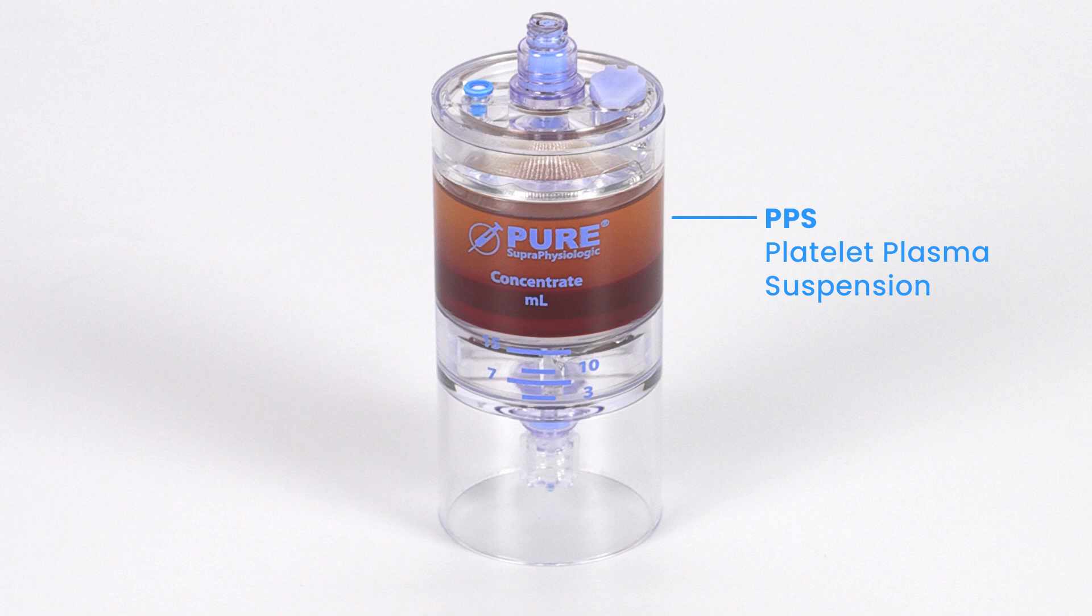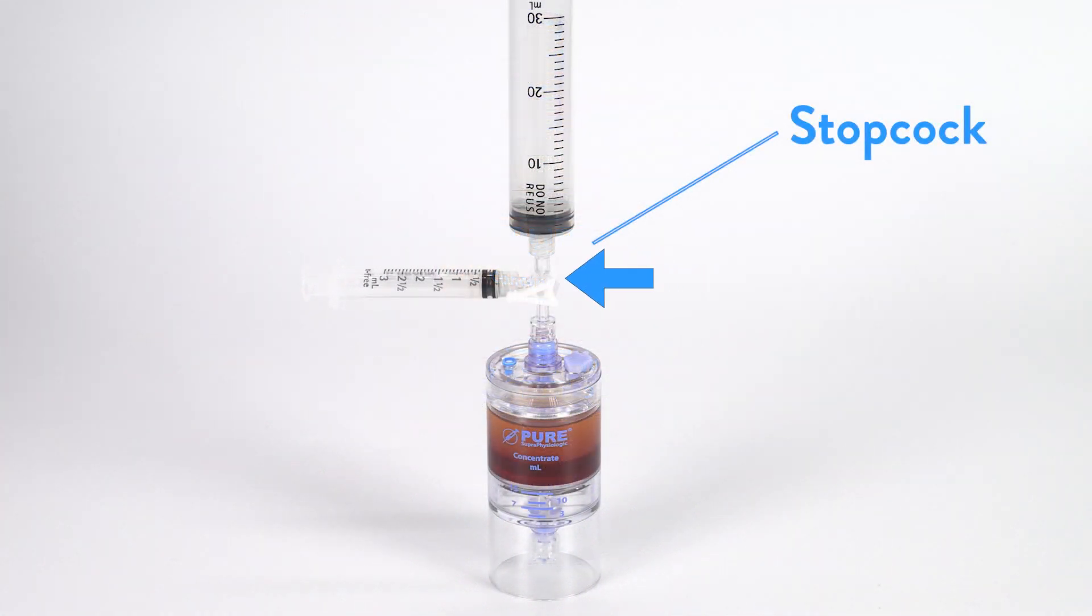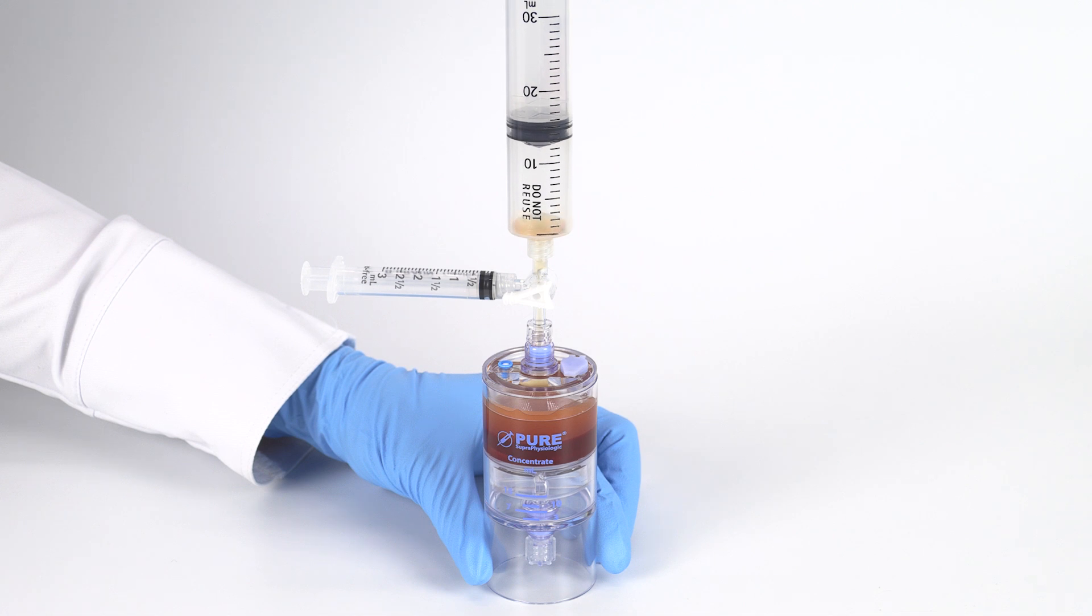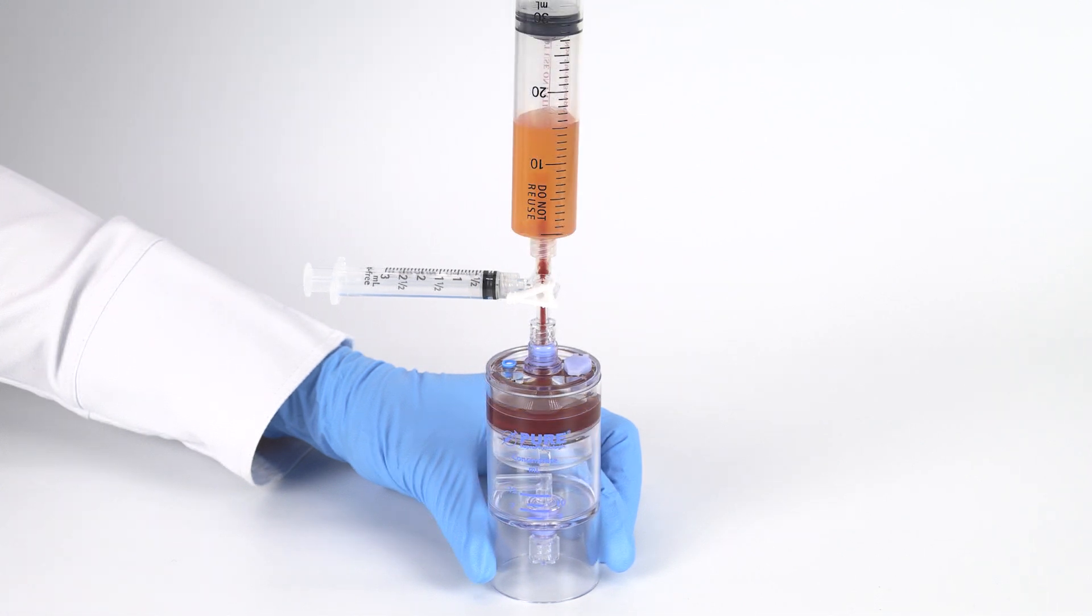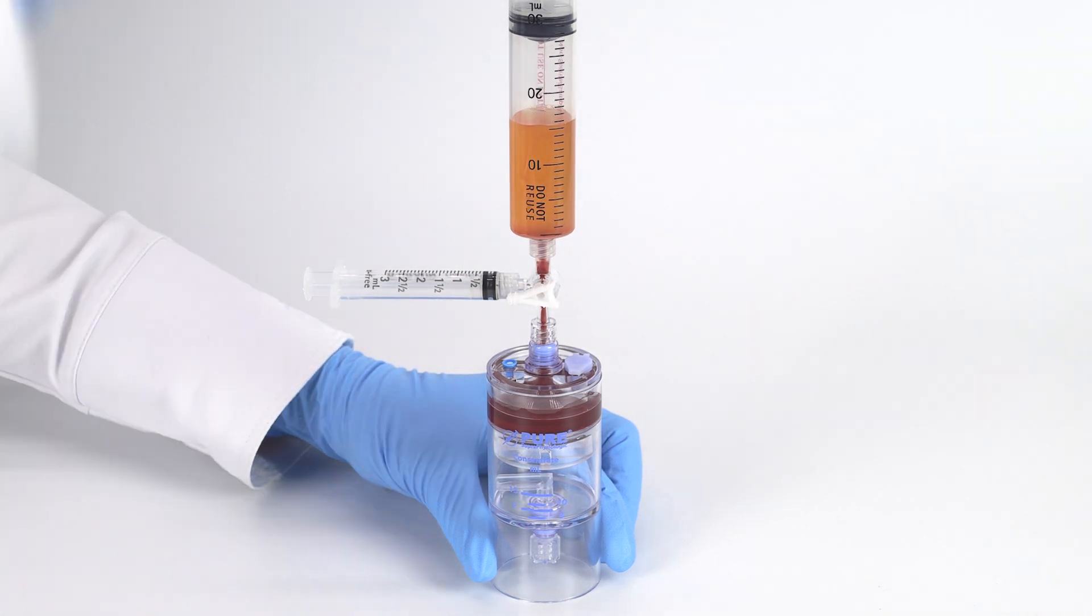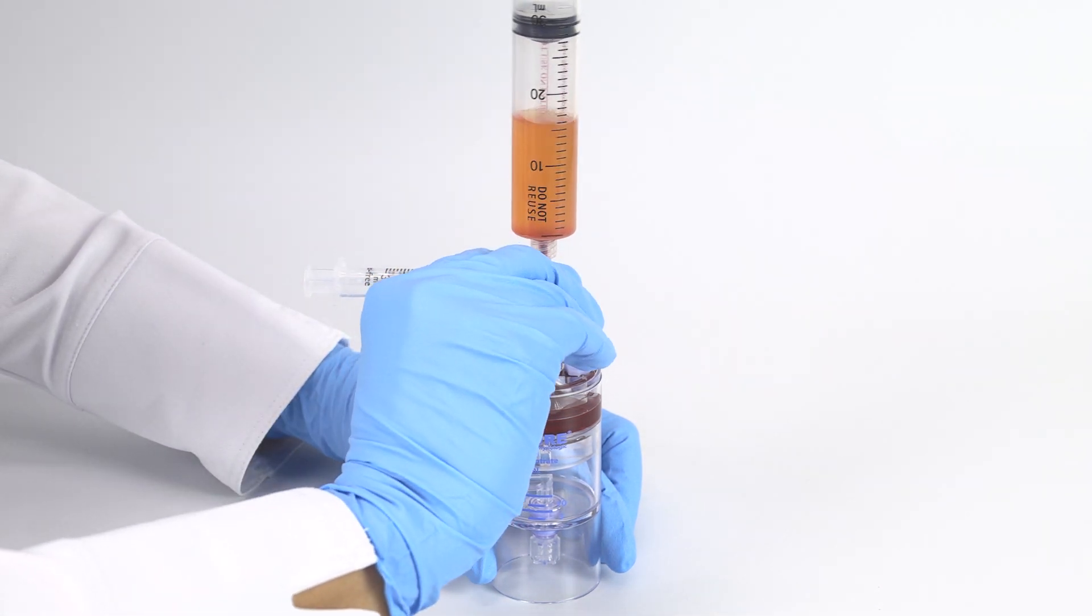After centrifugation, attach the sterile syringe accessory to the needleless port and aspirate the bone marrow plasma suspension. Then, open the stopcock to the 3-milliliter syringe and aspirate 1-milliliter of bone marrow red blood cells.